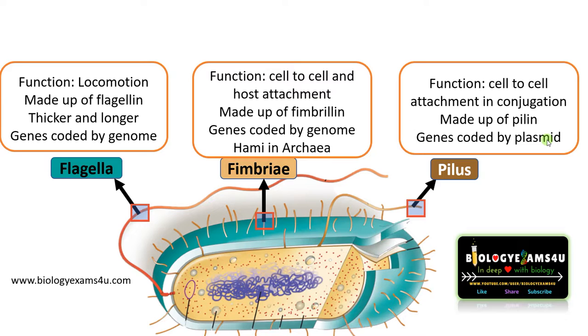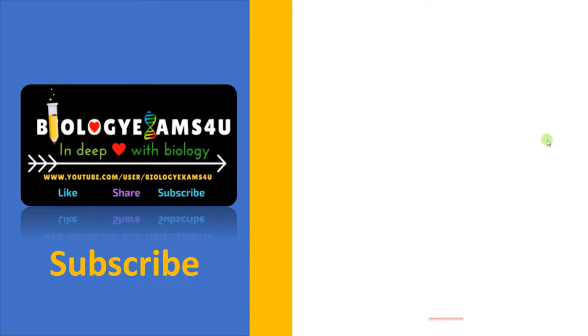These are the three cell surface appendages in a prokaryotic cell. If you find this video useful, please consider subscribing to this channel. Thank you so much for your support. You are with biologyexams4u.com.